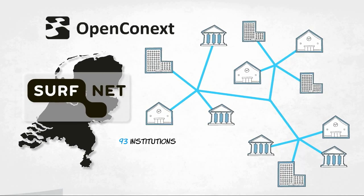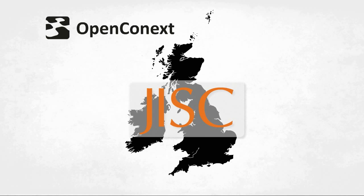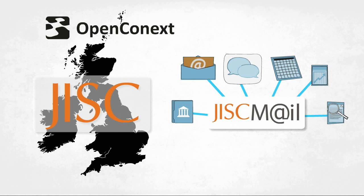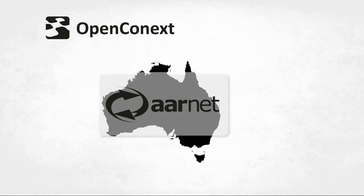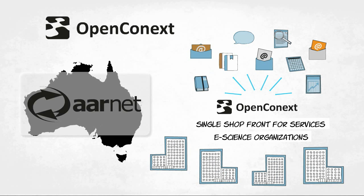In just over two years, SurfConnext has seen impressive growth. In the UK, JISC is piloting OpenConnext to create a collaborative platform around its JISC mail service, aimed at providing one million users with additional collaborative services. And in Australia, R-Net are trialing OpenConnext to provide a single shop front for R-Net services. Several e-science organizations will be building on their work.